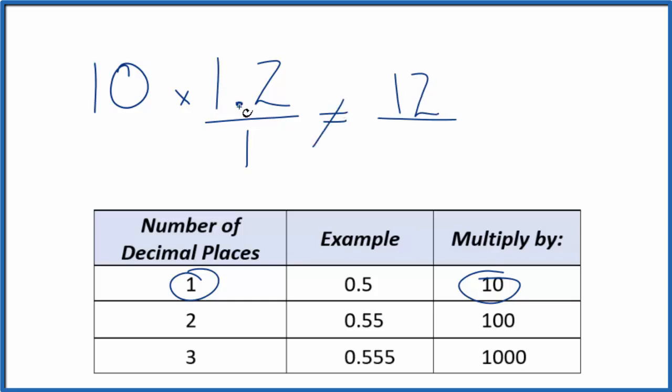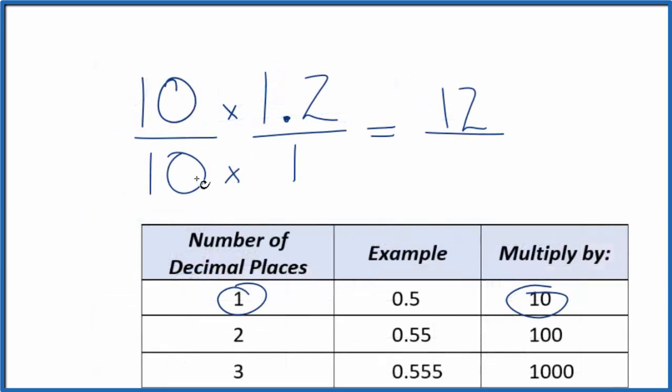But 12, that's not equal to 1.2. So we need to multiply the bottom by 10 as well. 10 divided by 10, that's 1. So we're just multiplying by 1. We're not changing anything. But now 10 times 1, that gives us 10, and we have a fraction.